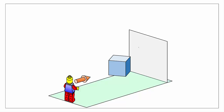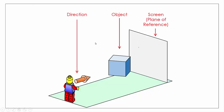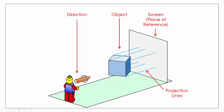From our previous video we'll remember that we need three components when it comes to creating an orthographic view. We need a direction, here represented by our Lego man and our arrow. We need an object, and we need a plane of reference or a screen to project our image onto. We take our viewing direction, gather up the image from the object, and project it using these projection lines, casting it like a shadow onto our screen or plane of reference, giving us our orthographic image.